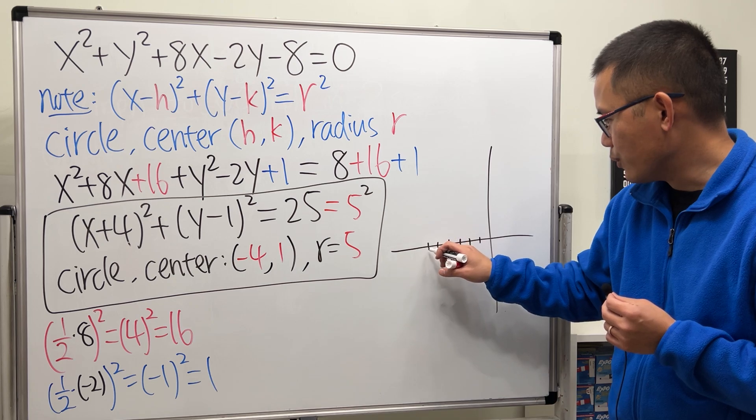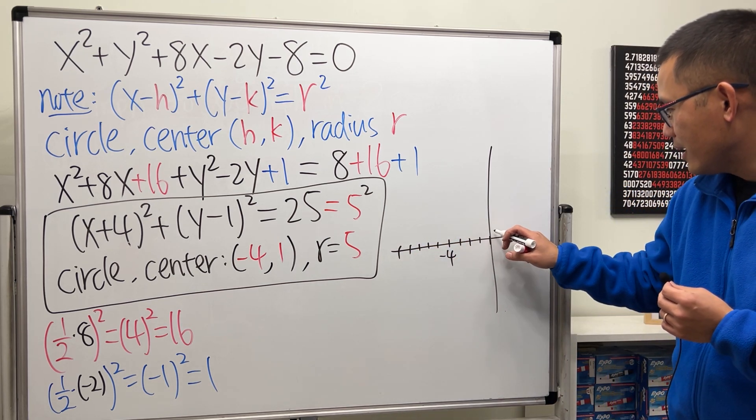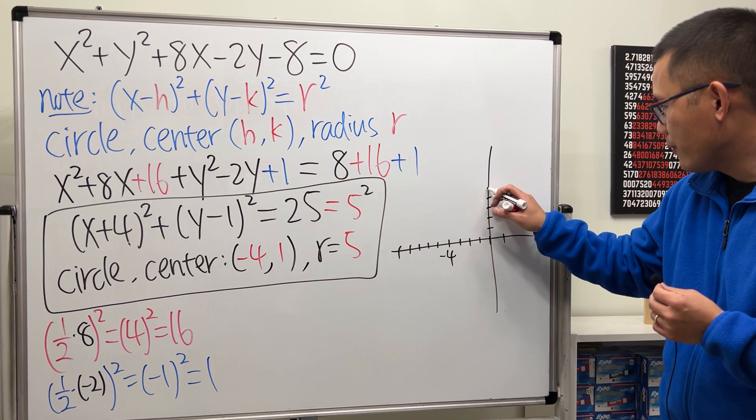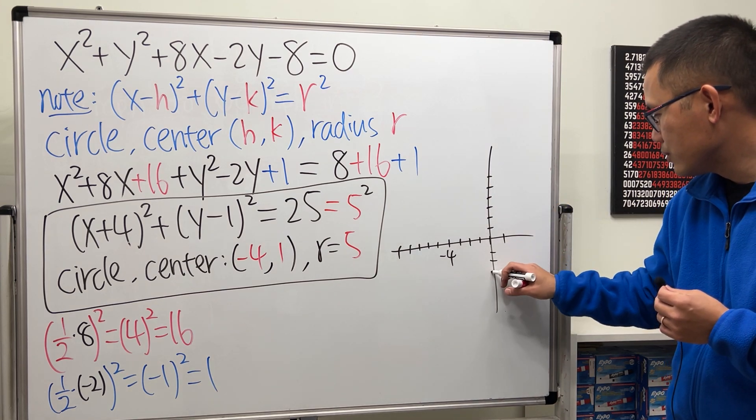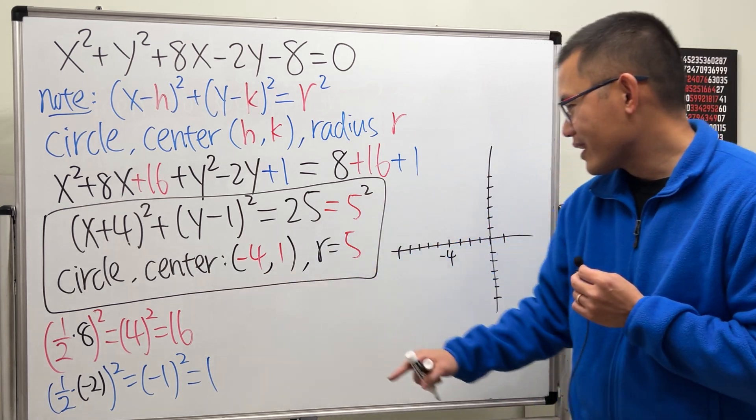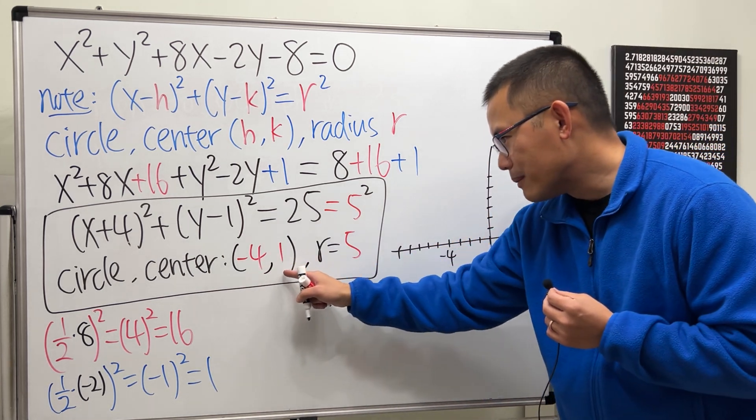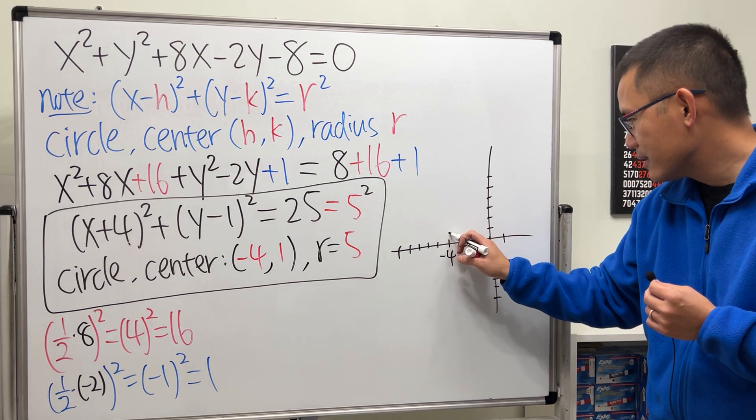And then just do a few more of this. Okay. And then 1, 2, 3, 4, 5, 6. 1, 2, 3, 4, 5. Something like that. Center. -1, 4. -1. -4, 1. It's right here. Center.